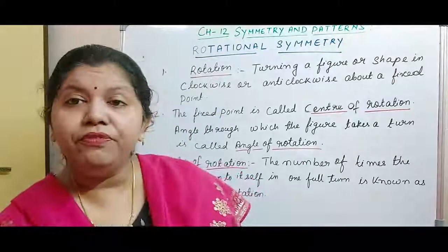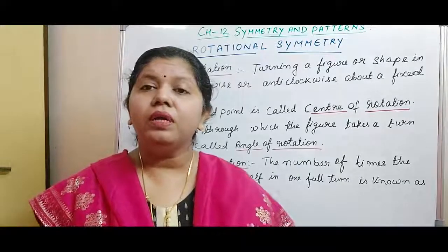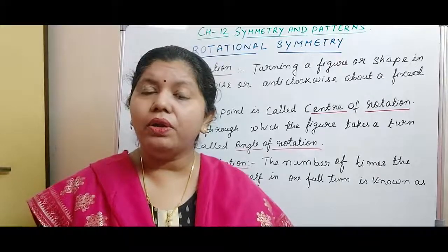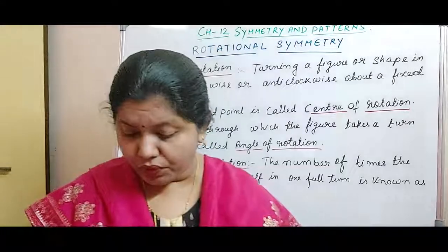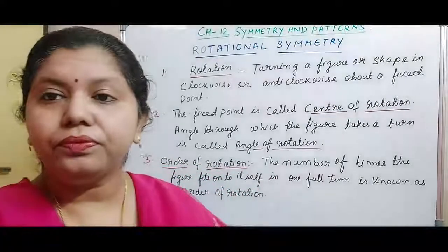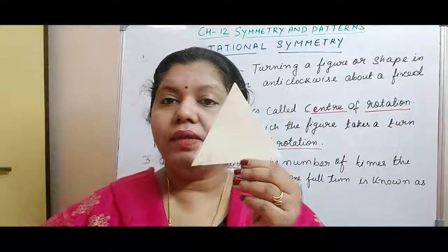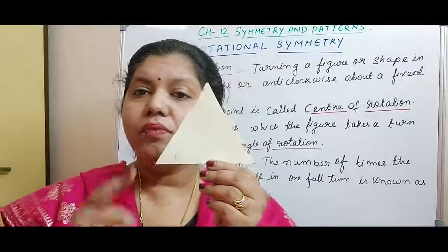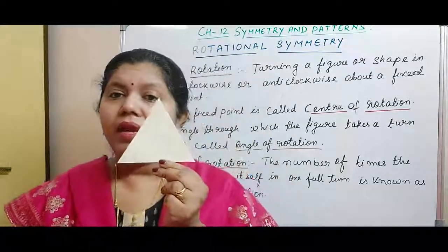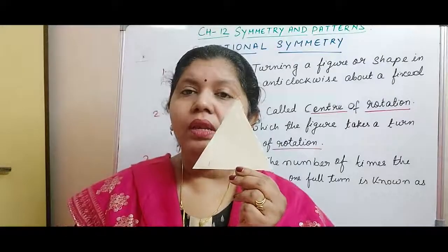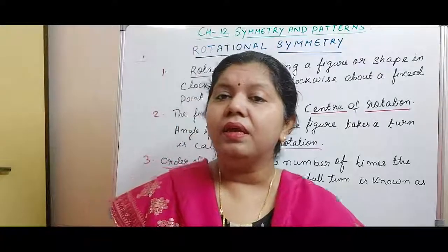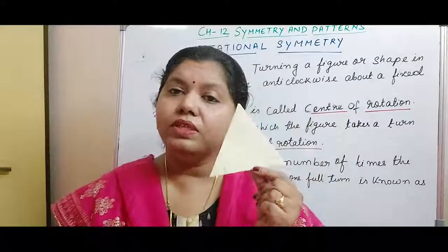Different figures or shapes have got different order of rotation. Some figures can have three order of rotation, some can have two. For example, when we take this shape — what is this shape? It is an equilateral triangle. If you measure the angle at each vertex you will get 60 degrees and the sides are also equal. Now the question that comes to our mind is what is the order of rotation of this particular shape.